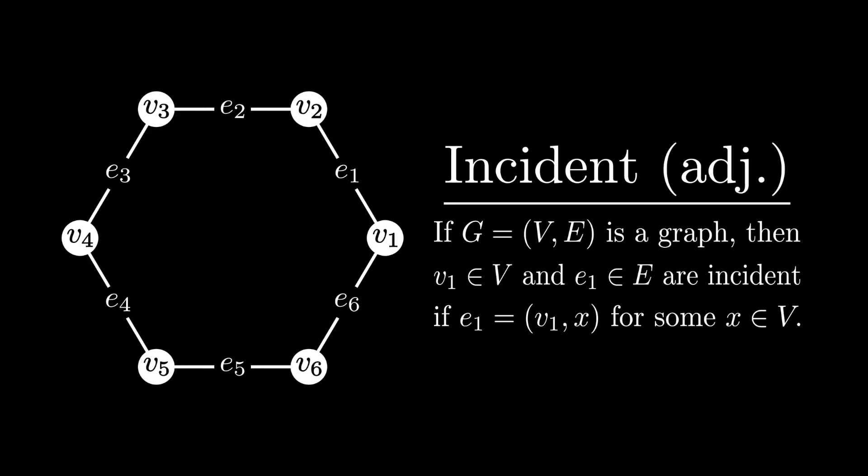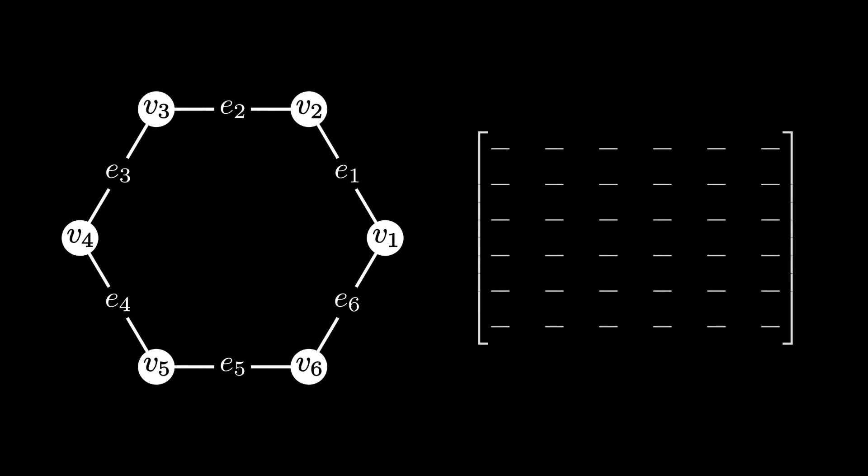Using our new definition, we're going to want to create a matrix. Specifically, we're going to let each row of this matrix represent each vertex of our graph, and we're going to let each column of the matrix represent each edge of our graph.